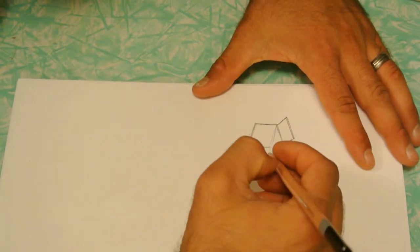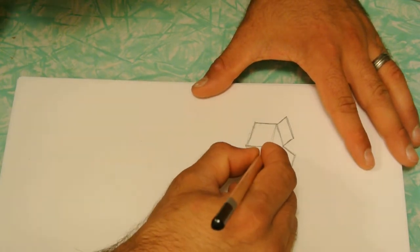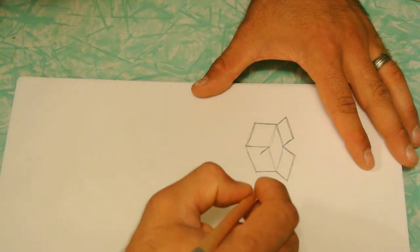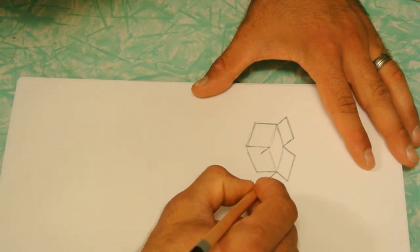Now you're going to draw the bottom two flaps. These are opening downwards, so you're going to do the same thing, except the opposite way.